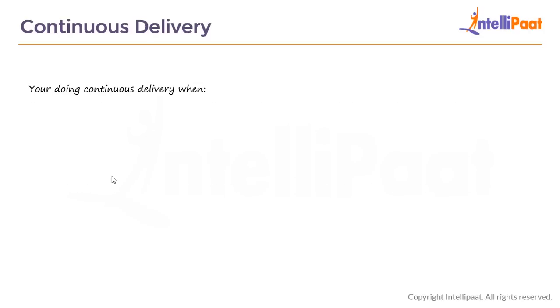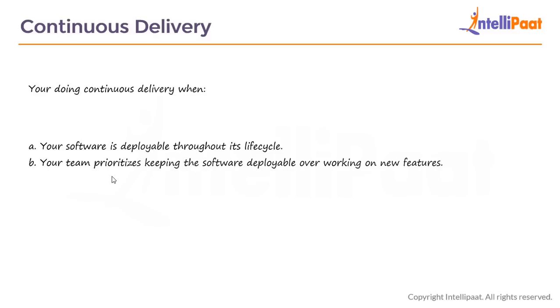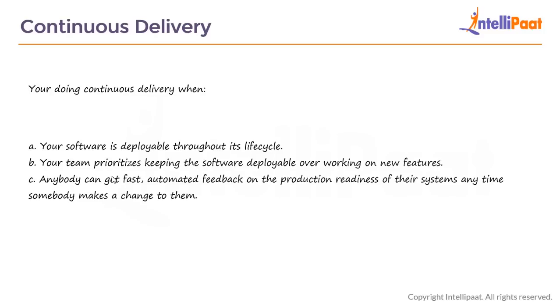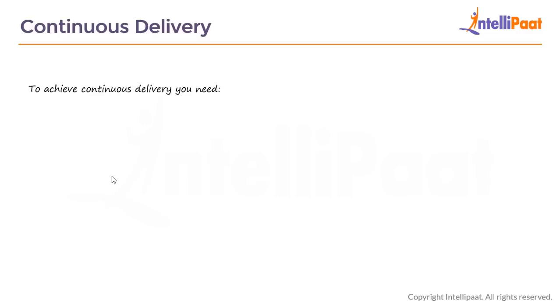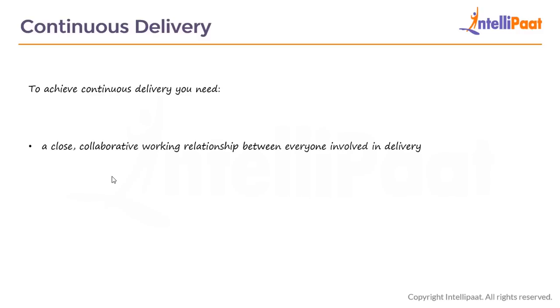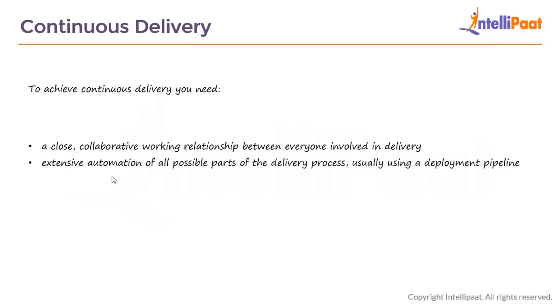You are practicing continuous delivery when: your software is deployable throughout its lifecycle; your team prioritizes keeping the software deployable over working on new features; anybody can get fast automated feedback on the production readiness of their systems anytime a change is made; and you can perform push-button deployments of any version of the software to any environment on demand. To achieve continuous delivery, you need a close collaborative working relationship between everyone involved — often referred to as a DevOps culture — and extensive automation of all possible parts of the delivery process, usually using a deployment pipeline.